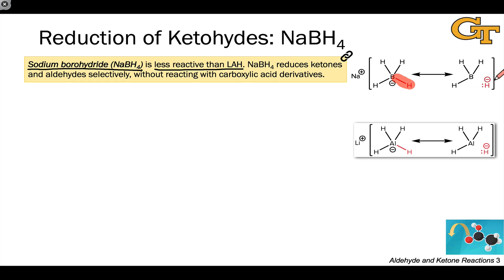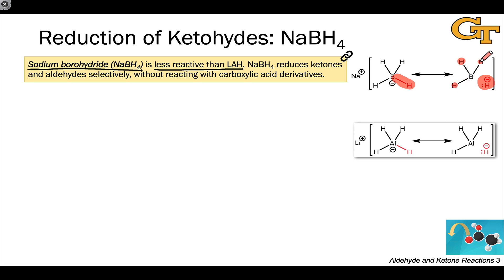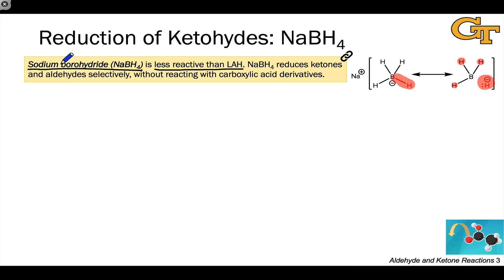This resonance form, in which there's negative charge on the hydrogen rather than on boron, is an extremely important resonance form. In fact, in the true structure of the borohydride anion, the negative charge is living on these hydrogens and not on the boron atom. And so it's a great reducing agent.